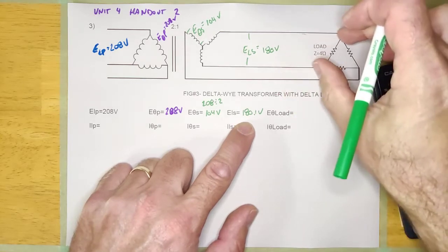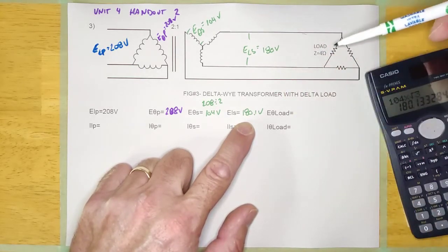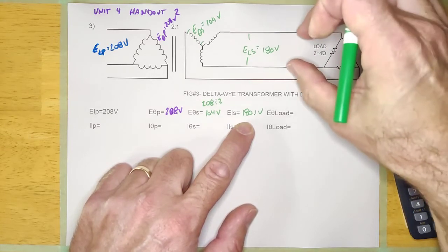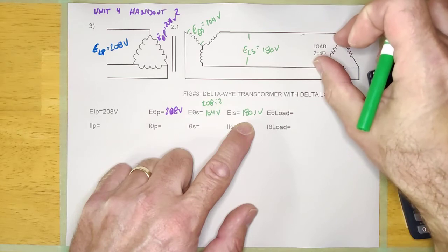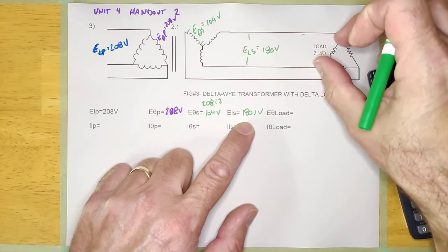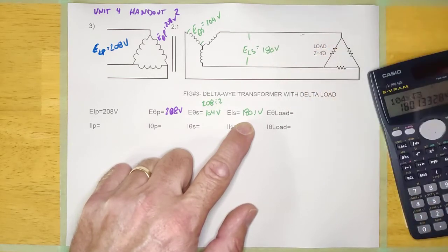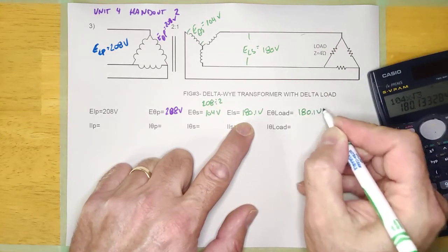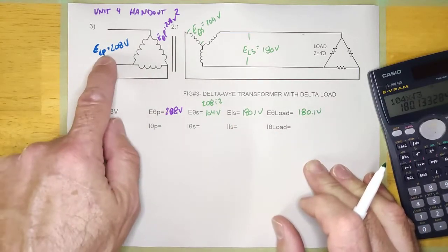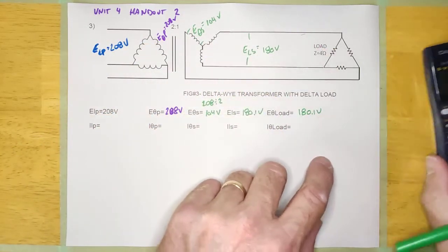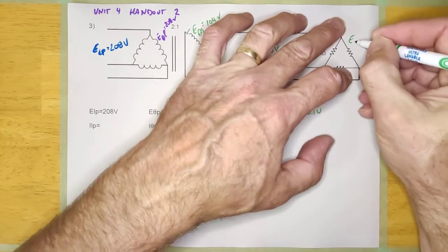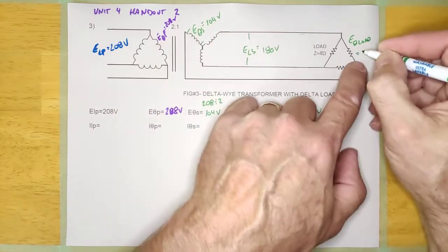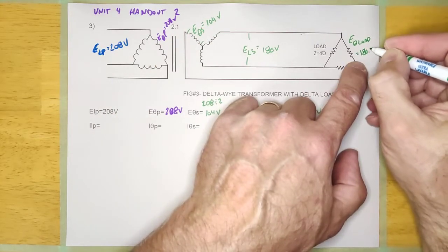Here's the load — we haven't done that yet, but we're going to apply the rules for a delta load. This is a delta load, so if I'm measuring 180 volts on the line there, what would I measure at the load? All I'm doing is moving my meter leads a little bit, so it's going to be equal. So E-phase load is 180.1 volts.